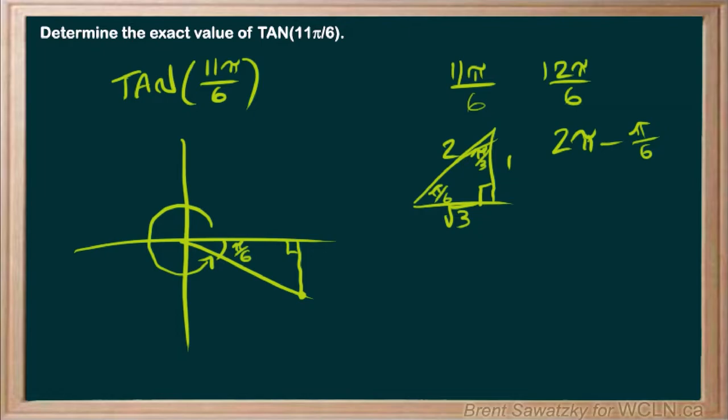If we were to fit this in, that means that across from the pi over 6, we have our 1. But in this case, it's a negative 1, right? Because we would be going down below that x-axis there.